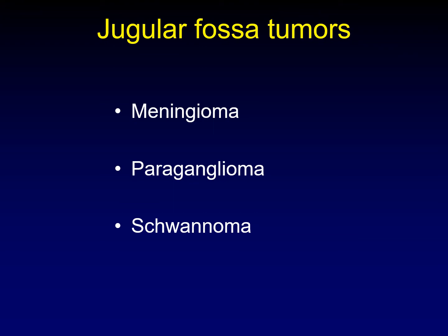There are three main tumors that arise in this location: meningiomas, paragangliomas, and schwannomas. They share location in the jugular fossa, and they all enhance — so when you see enhancement of a jugular fossa tumor, you are still left with the same three differential diagnoses. To tell them apart, we need a CT to look at the effect on the underlying bone. A meningioma causes hyperostosis. A paraganglioma causes destruction of the underlying bone. A schwannoma causes smooth, uniform remodeling of the underlying bone. Let's see some examples.